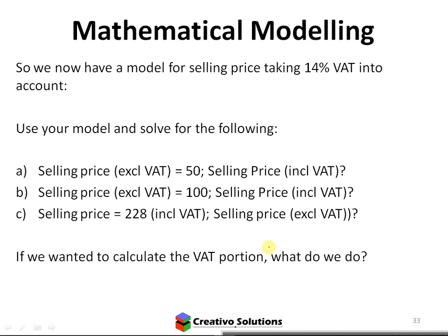Use your model and solve for the following. I want to know: what is the selling price including VAT? We said we have to do 1.14X. So what is 1.14 times 50? 57. Yes. And what is 57? The selling price including VAT. Notice how I'm using the equation to get the right answer — that's modeling. You're creating a model that gives you an answer based on your scenario.